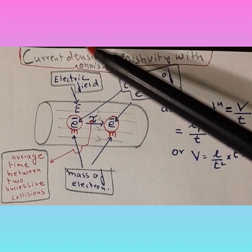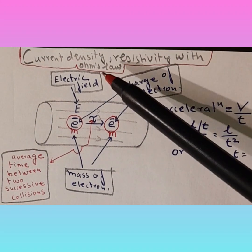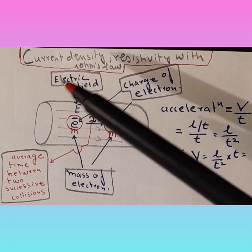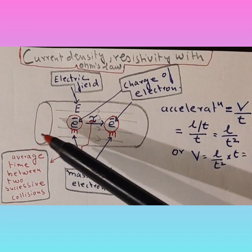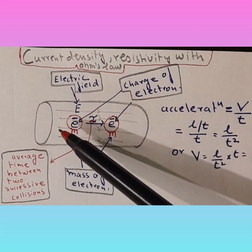This video is about current density, resistivity with Ohm's law. Now assume a wire, a metal wire through which passes electrons.